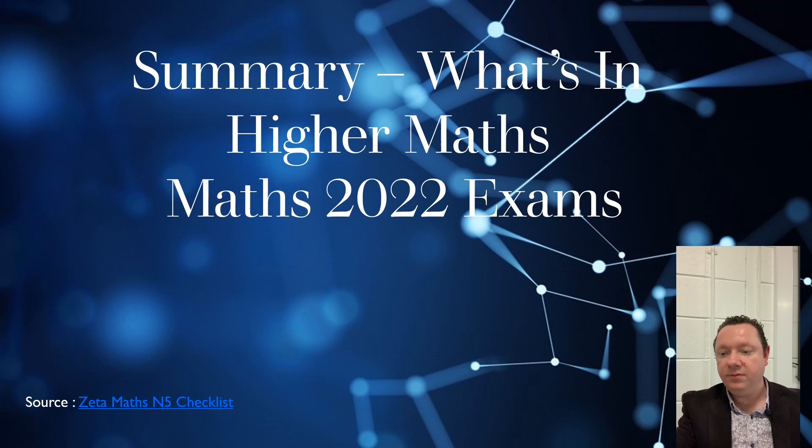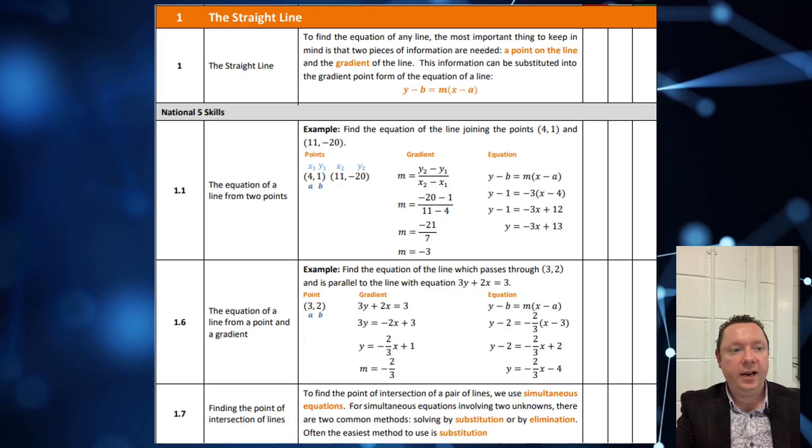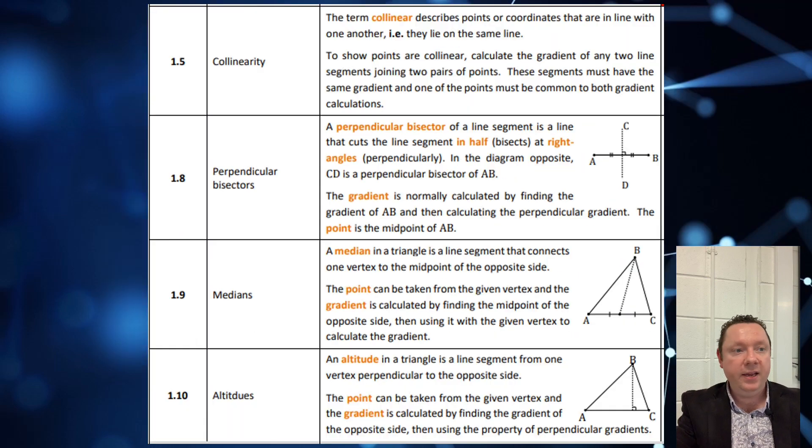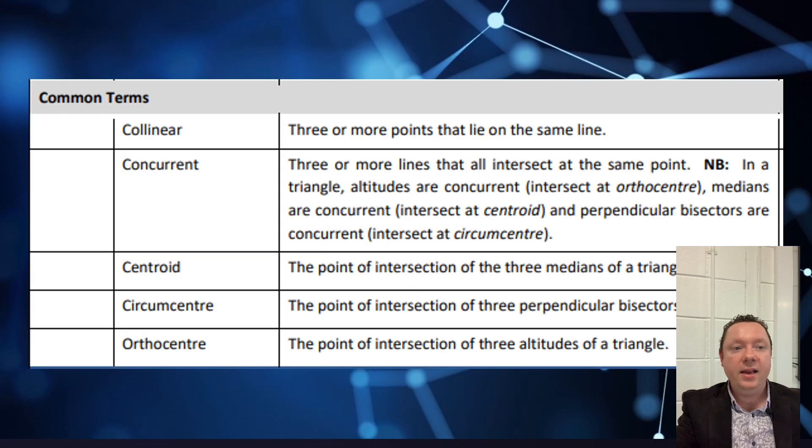This is from the Zeta Maths. Straight line. Most stuff with straight lines in, all your stuff from National 5 should be skills that you already know. How to find the gradient. How to find the point of intersection between two lines. And from higher, midpoint, gradients, perpendicular lines. Knowing that M equals tan theta. Colinearity, perpendicular bisectors, medians and altitudes. All that's still in. And then these are the common terms you should know for straight line stuff.